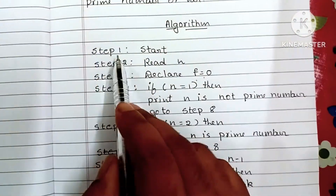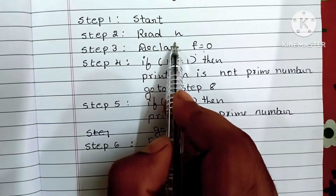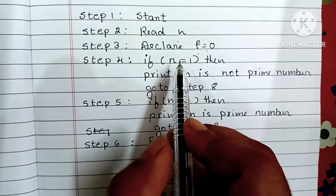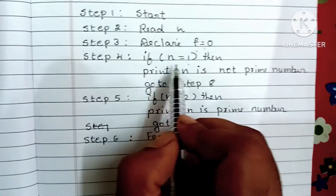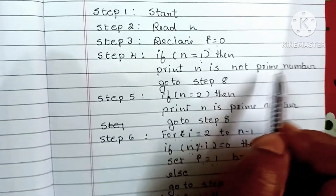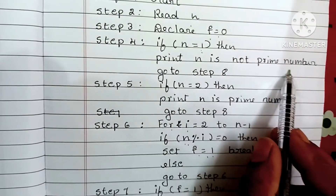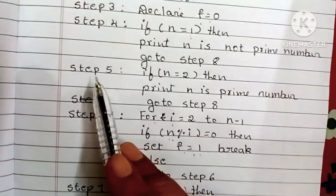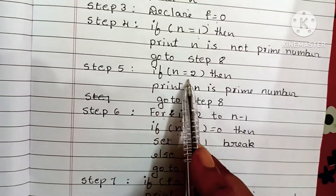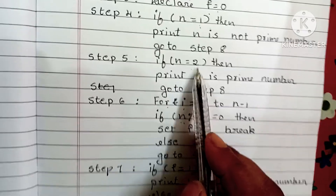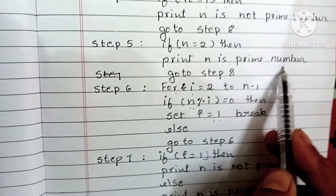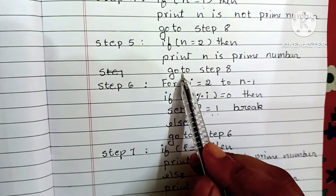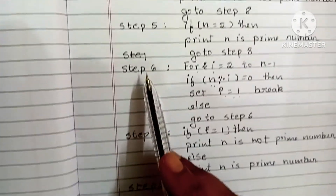Recap: Step 1 — start. Step 2 — read N. Step 3 — declare F equal to 0. Step 4 — if N equals 1, print N is not a prime number, then go to step 8. Step 5 — if N equals 2, print N is a prime number, then go to step 8.